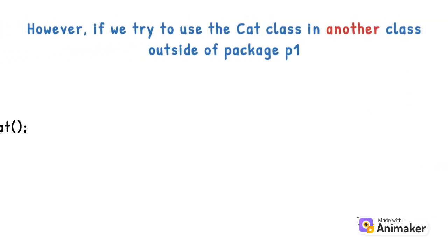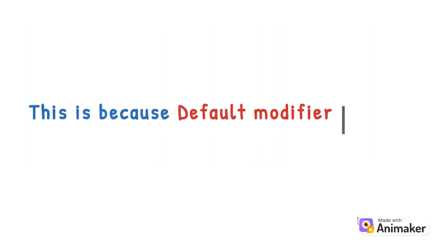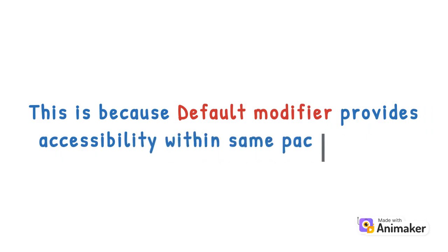However, if we try to use the cat class in another class outside of package P1, we will get a compilation error. This is because default modifier provides accessibility within same package only.